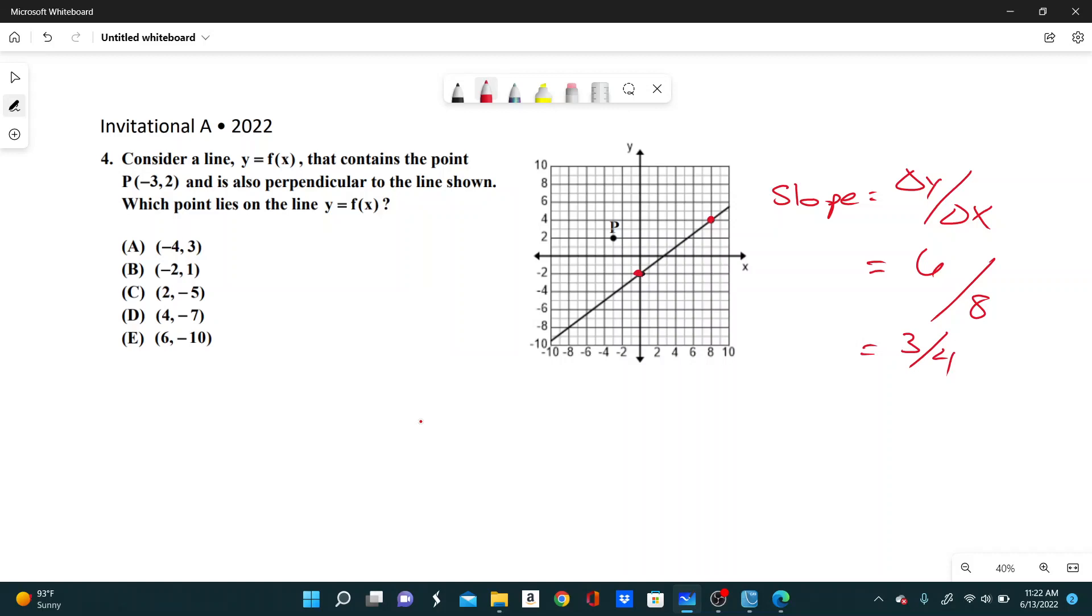The perpendicular slope is just the negative reciprocal, so the perpendicular slope would be negative 4 thirds.